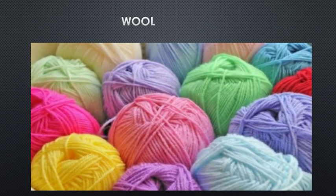Animal fibres are obtained from animals. They are of mainly two types: wool and silk. Wool comes from sheep, goat, camel, yak and some other animals. These wool-yielding animals bear hair on their body. Silk is another animal fibre obtained from the silkworm. But today we will discuss about wool.